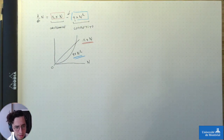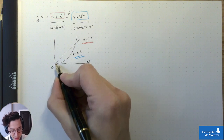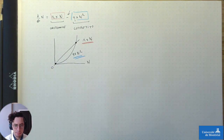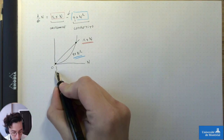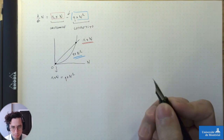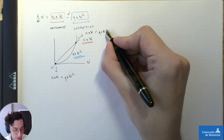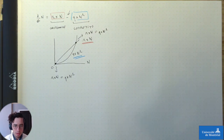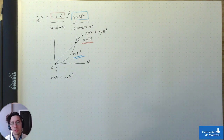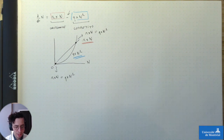Deux choses. La chose numéro 1, c'est que nos deux courbes vont se croiser à deux points. Quand on est sur ces points, r×n est égal à q×n². Il y a deux points dans notre espace, dans notre ligne qui va de 0 jusqu'à n, pour lesquels le processus de croissance est exactement égal au processus de compétition. Autrement dit, s'il y a autant d'individus qui sont créés que d'individus qui sont enlevés du modèle, la dn/dt va être égal à 0 et le modèle va arrêter de varier dans le temps. Ça, c'est la première chose qu'on a apprise.